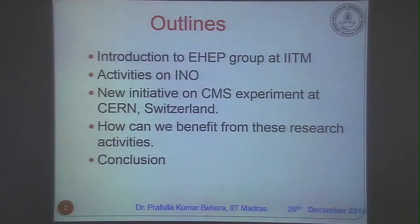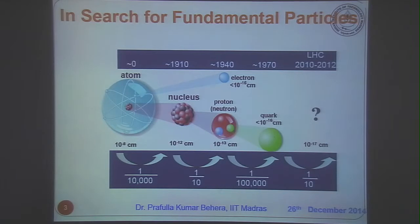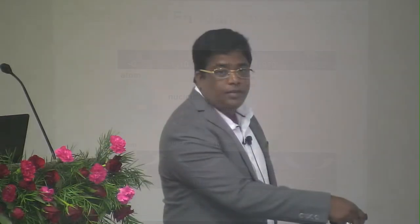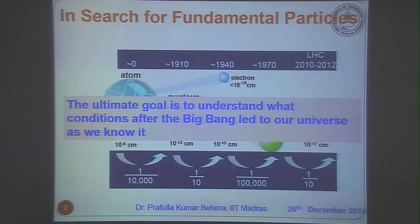My outline before I move — I just want to say why this is so important because this is a research field. Experimental high energy physics aims to search for the fundamental particles. We started with that and we are now probing the length scale of 10 to the minus 17 — looking at the smallest building block of our universe. The main aim of this field and the ultimate goal is to understand what conditions after the Big Bang led to our universe as we know it today.